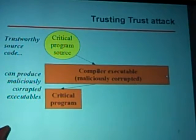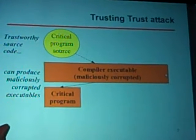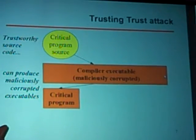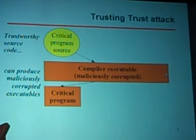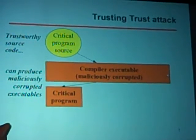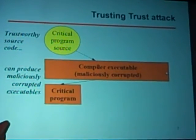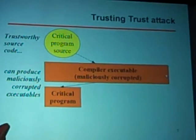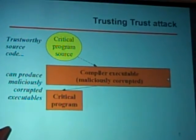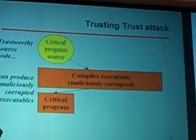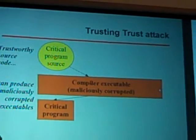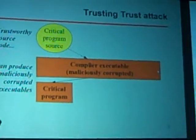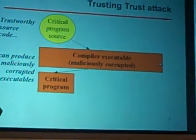You could have completely trustworthy source code and end up with maliciously corrupted executables if the compiler itself is maliciously corrupted. For example, it might be the login program for a computer or a control system for a dam — but the maliciously corrupted compiler could, in theory, make it do anything.